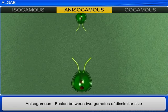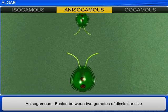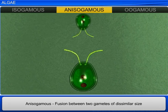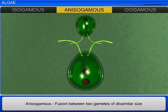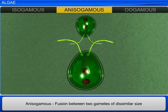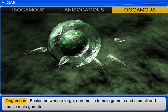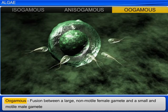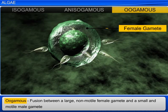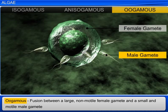When fusion takes place between two gametes of dissimilar size, the reproduction is termed as anisogamous. Oogamous is a fusion between a large, non-motile female gamete and a small, motile male gamete.